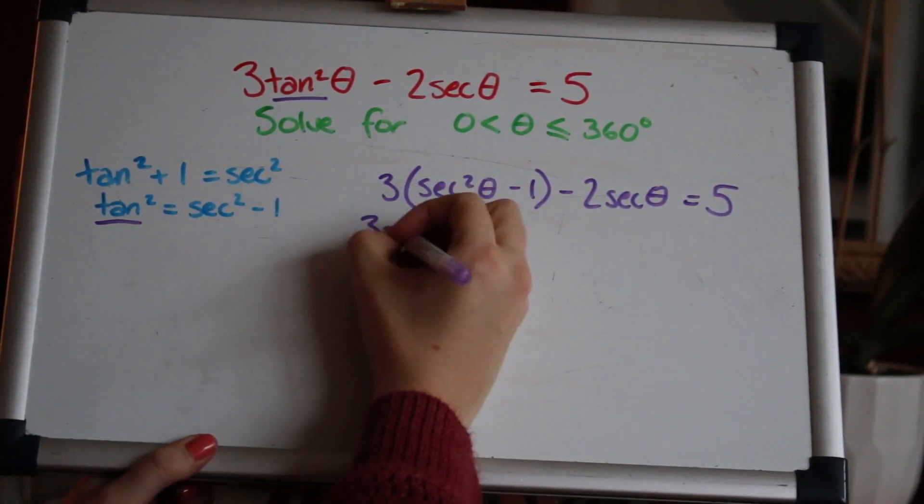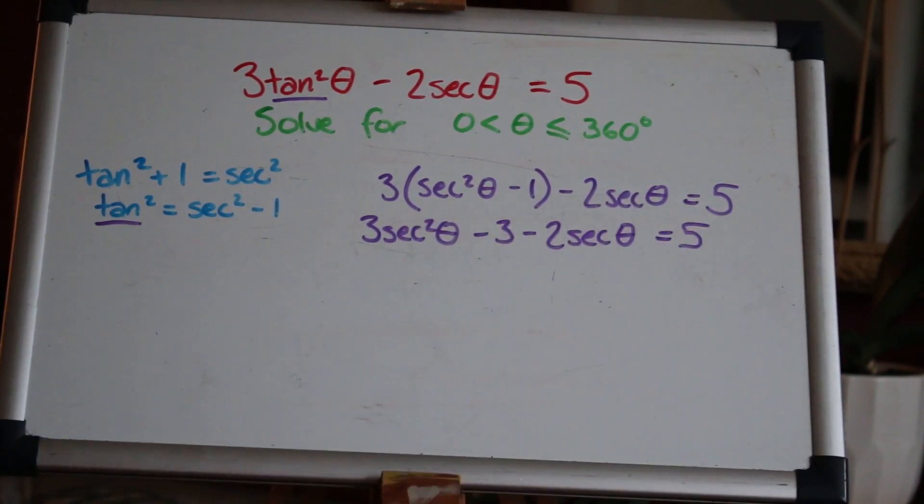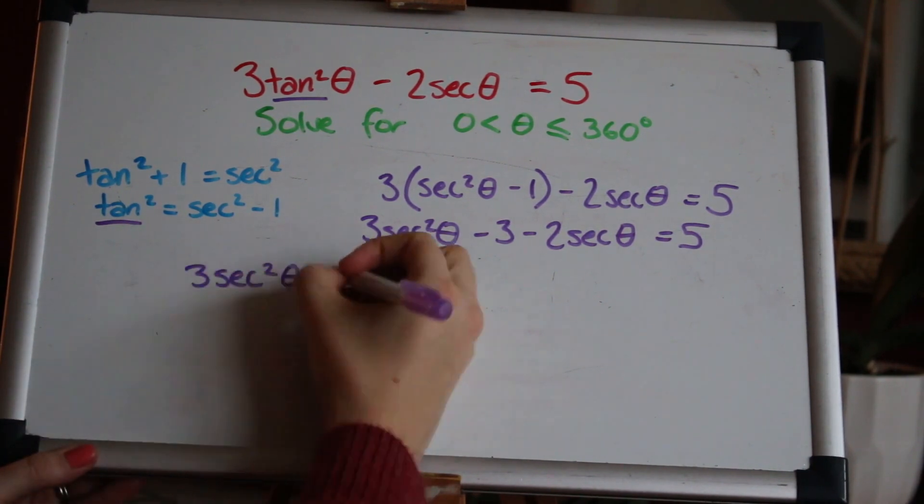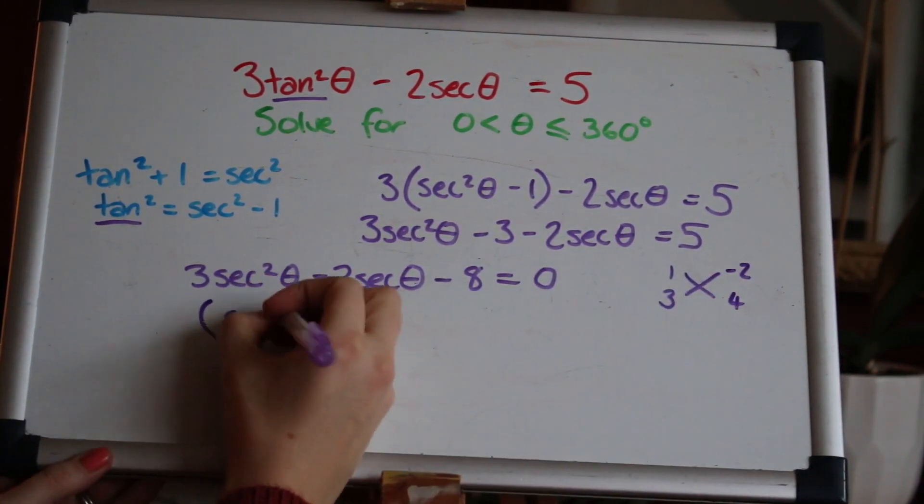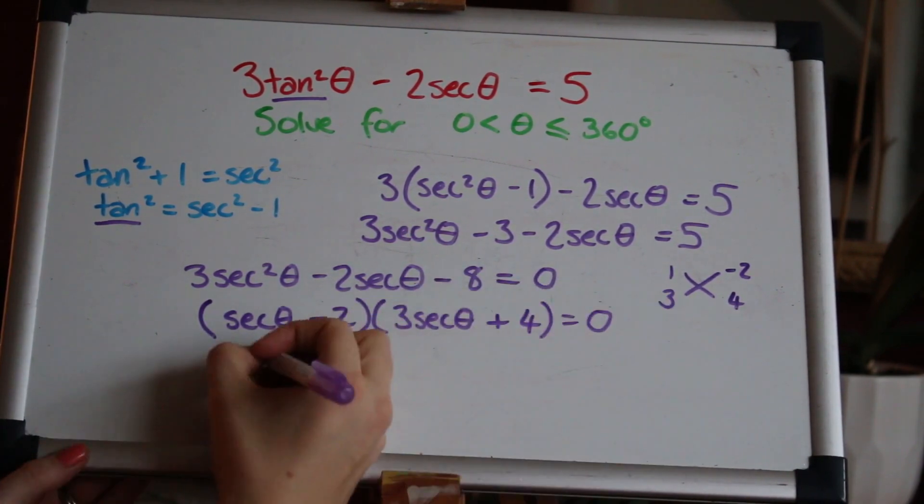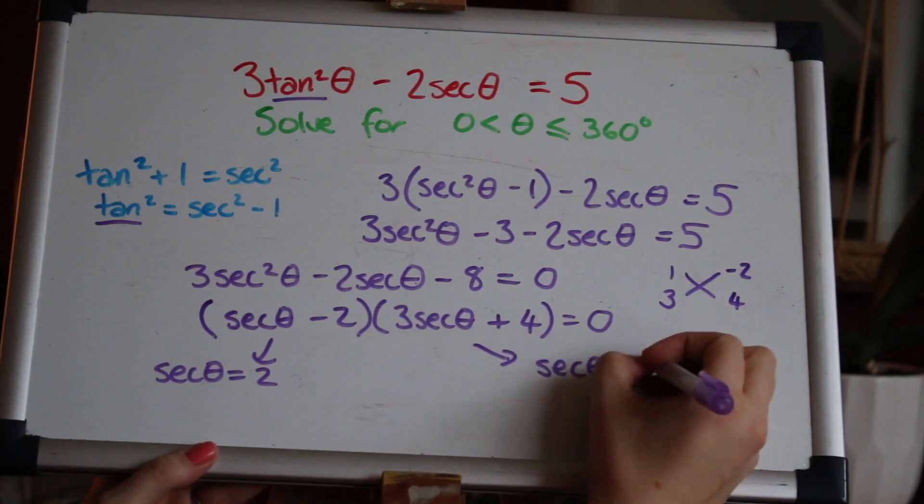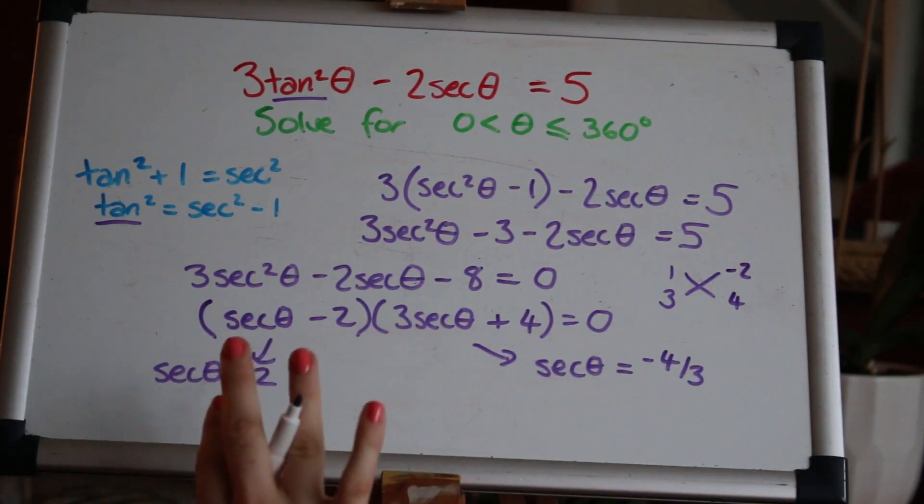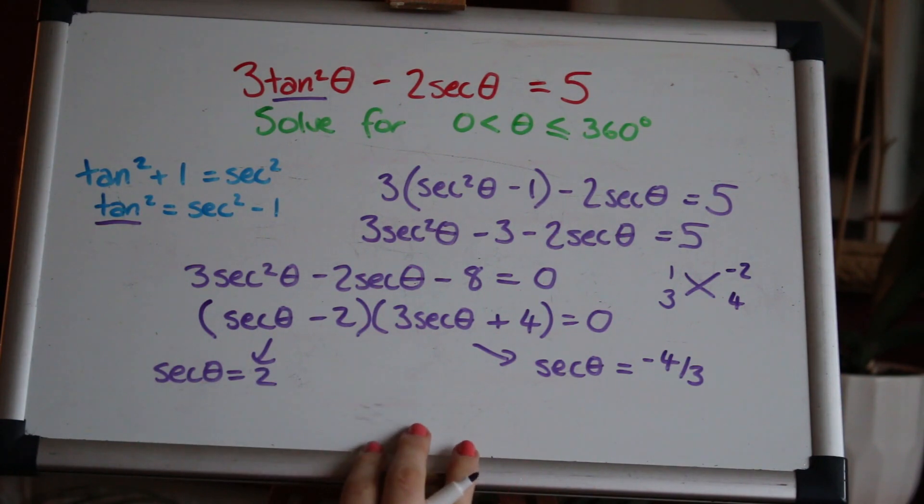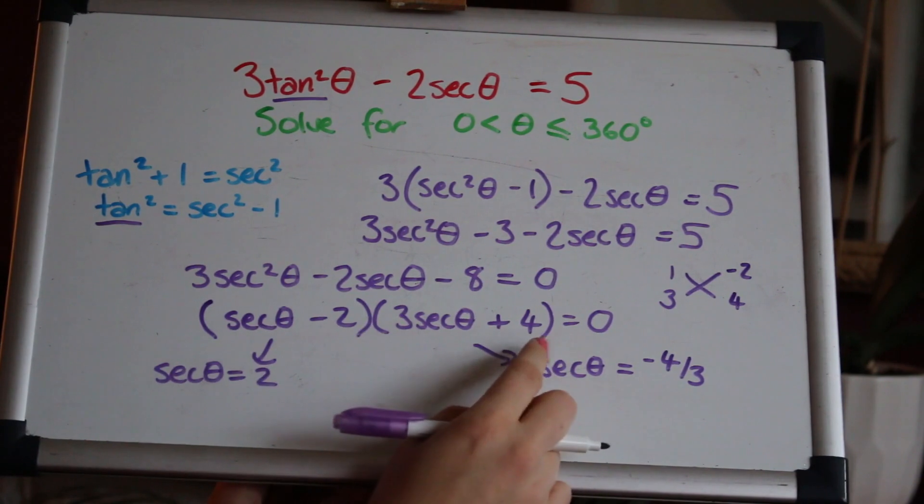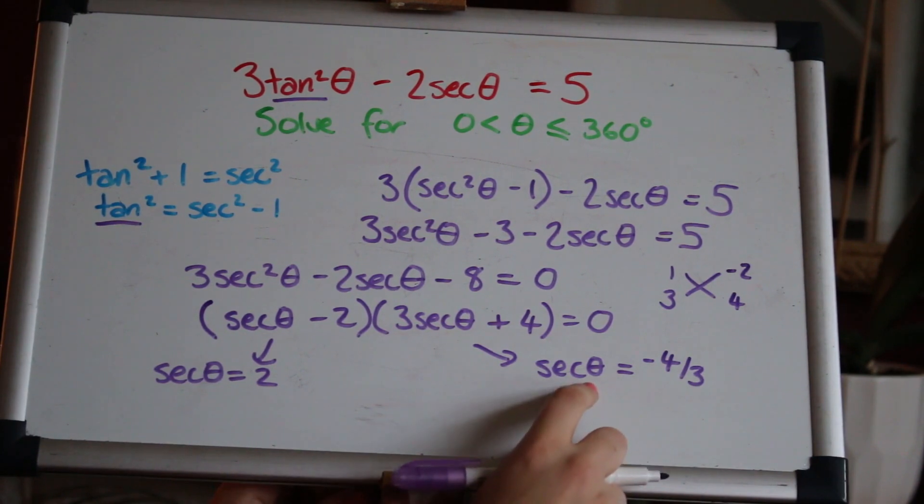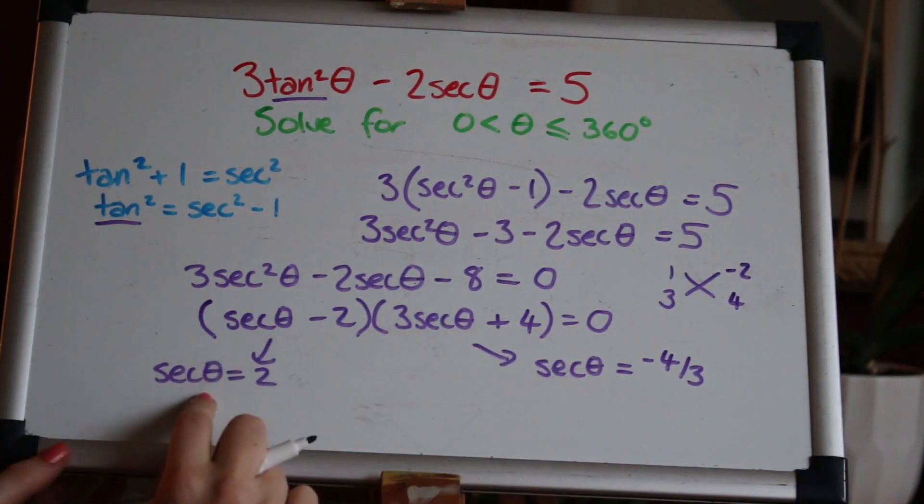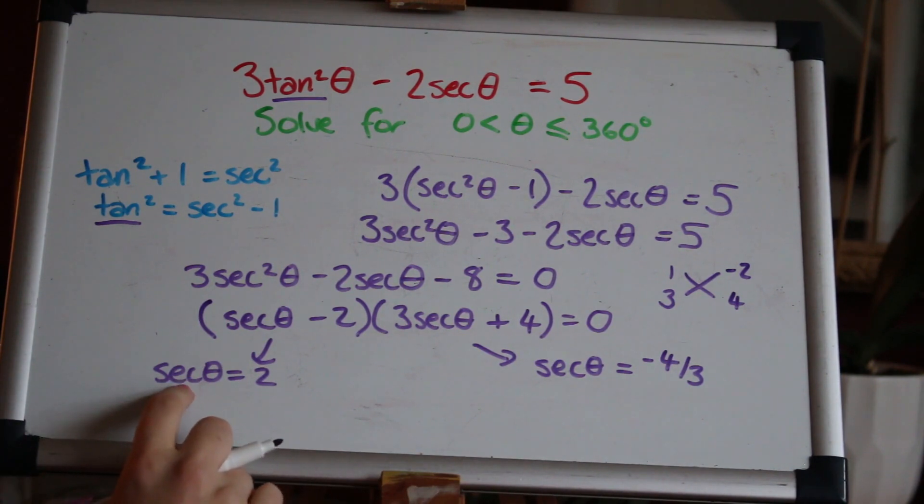Now expand the brackets: 3(sec²θ - 1) - 2secθ = 5. This is now looking like a quadratic equation so let's rearrange it and solve: 3sec²θ - 2secθ - 8 = 0. Okay I hope you're following this. I'm building on other videos here so I've gone through this sort of work before and this is a disguised quadratic which I've factorised to solve: (secθ - 2)(3secθ + 4) = 0. Either of these brackets could be zero so I've skipped a line of working and gone on there.